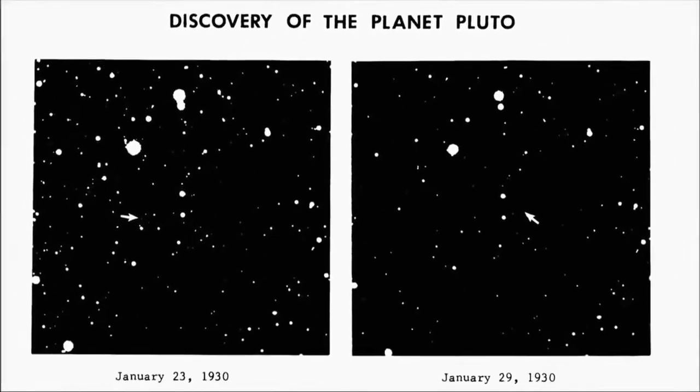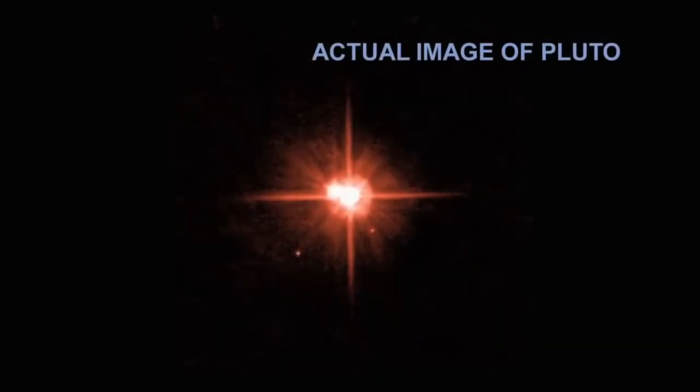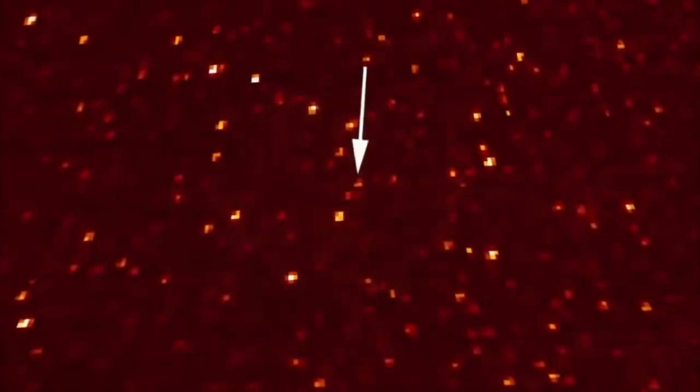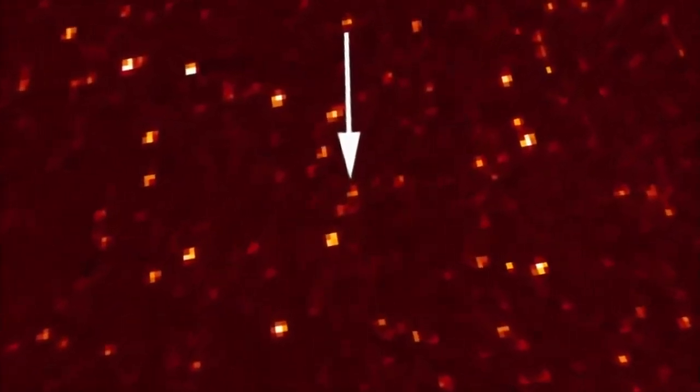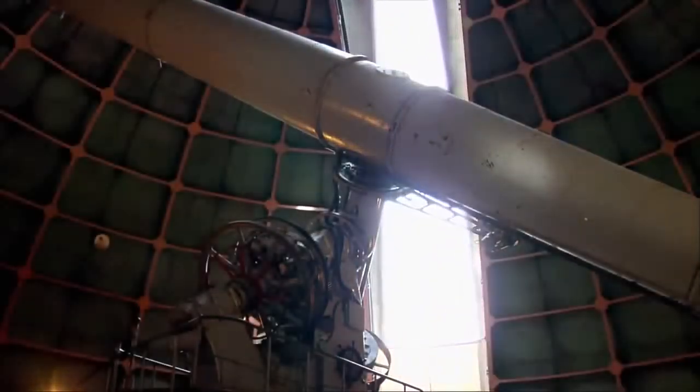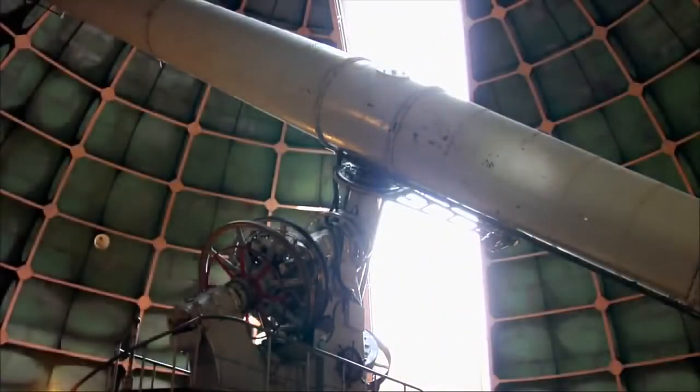But was Pluto Planet X? Some scientists argued that Pluto was far too small and didn't have enough mass to significantly perturb the orbits of its neighboring gas giants, Uranus and Neptune. Astronomers have since realized that there is no such Planet X. It had been predicted using inaccurate estimates of Neptune's mass. Even though Pluto wasn't Planet X, could it still be classified as a planet?